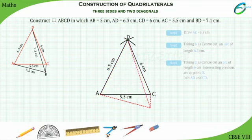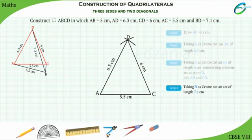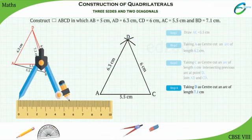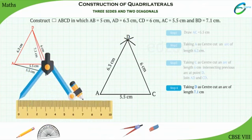Step 4: Now let us consider this diagonal BD. Construct diagonal BD equal to 7.1 centimeters. Hence placing the compass pointer at point D and taking the measurement 7.1 centimeters, cut an arc.